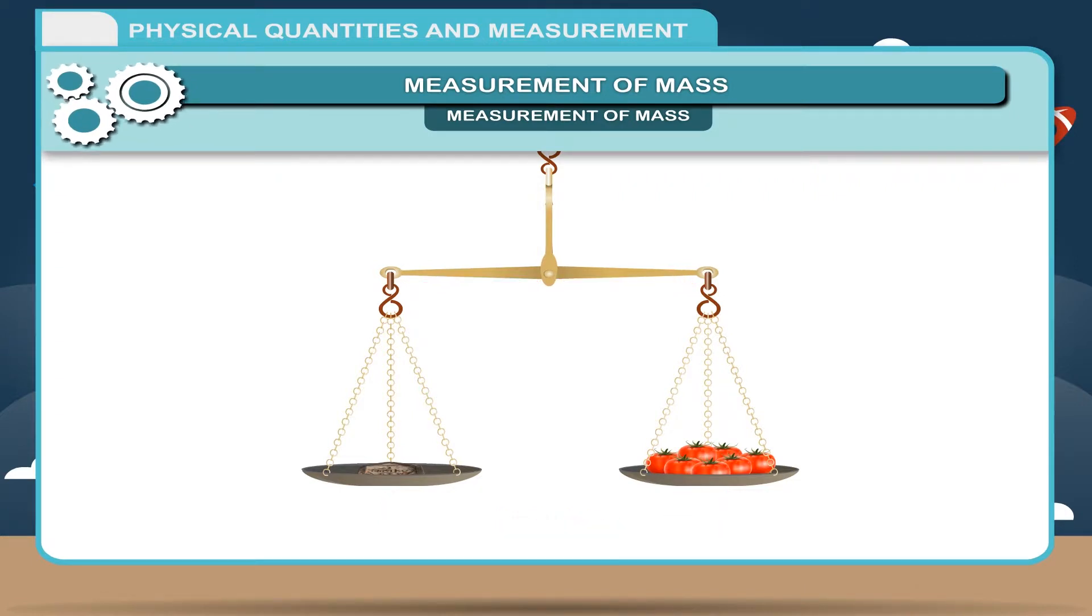The object to be weighed is placed on one pan and standard weights are placed on the other till both the pans are perfectly balanced. The total of the standard weights give mass of the object.